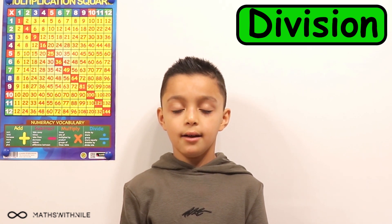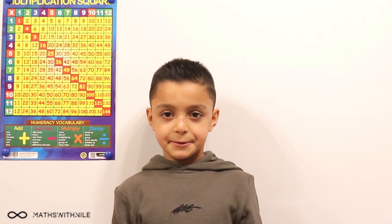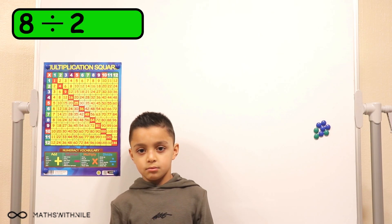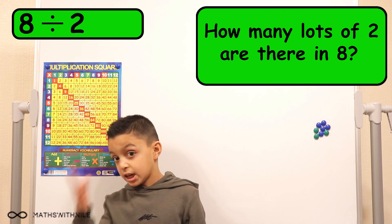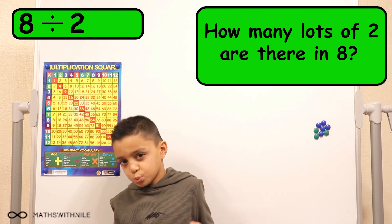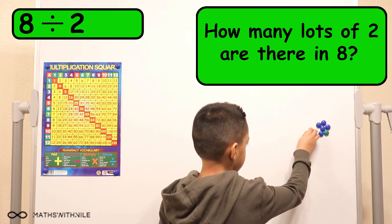Let's start with those counters that you have there. How many counters do you have? Eight. Eight. So what does it mean if the question is eight divided by two? How many lots of two are in eight? Very good.